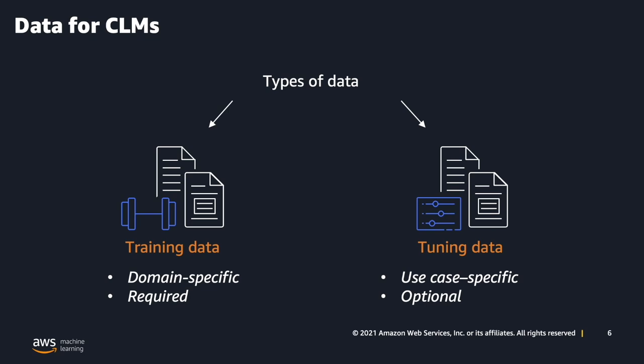The data you provide to train your custom language model can be of two types: training data and tuning data. It's important to distinguish between these two. Broadly, training data is domain-specific — in the examples we previously mentioned, that would include text data from sources like sales and marketing collateral, website content, or even textbooks. Tuning data is use-case specific — that would include text from human-annotated audio transcripts of actual phone calls or media content. Training data is required in order to generate any CLM, while tuning data is optional but recommended.